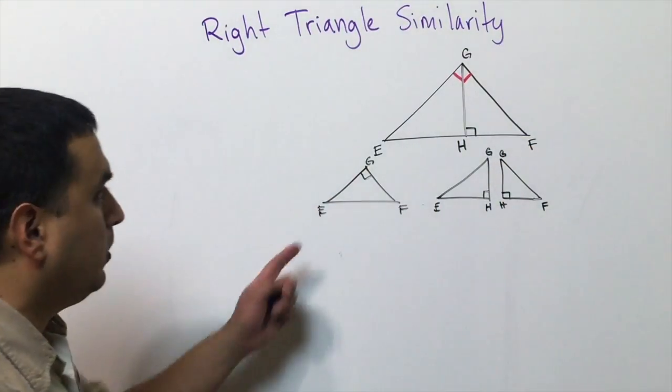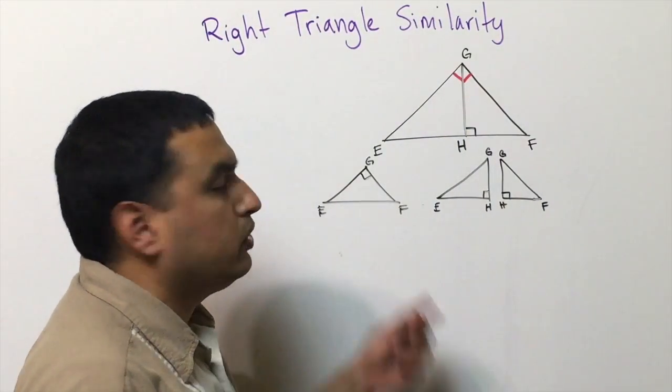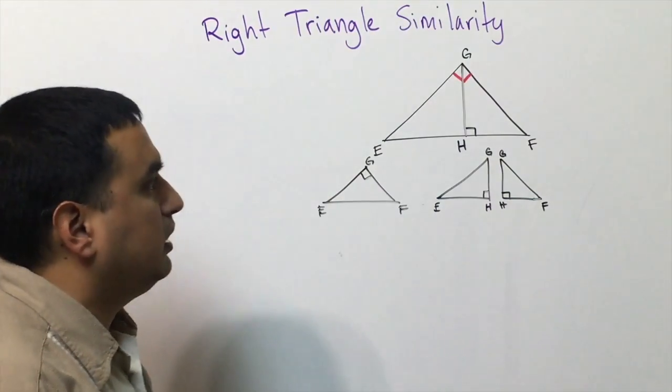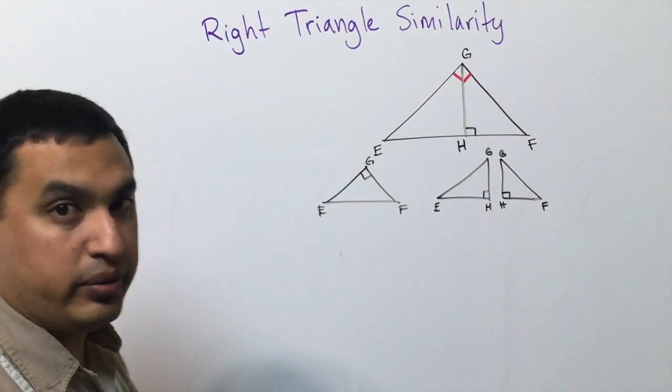All three of these triangles turn out to be similar, so we can use proportions and the things we've talked about in previous lessons to find different measurements. That's what we're going to look at.